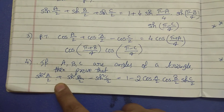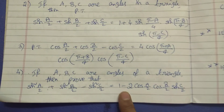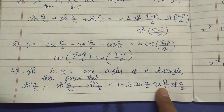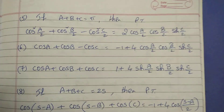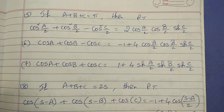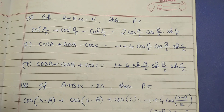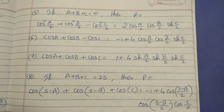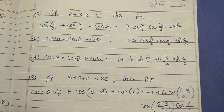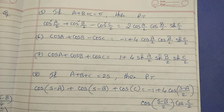Triangle: prove that sin squared A by 2 plus sin squared B by 2 minus sin squared C by 2 equals 1 minus 2 cos A by 2 cos B by 2 sin C by 2. In this approach. Next: A plus B plus C equals pi. Cos squared A by 2 plus cos B by 2 minus cos C by 2 equals 2 cos A by 2 cos B by 2 sin C by 2. Next: cos C plus cos B — simple, easy. Cos C plus cos B plus cos C by 3.